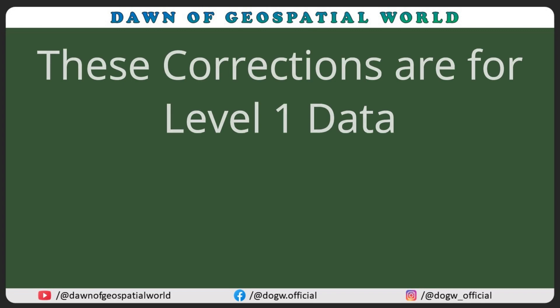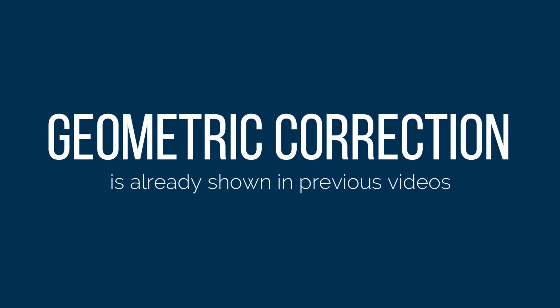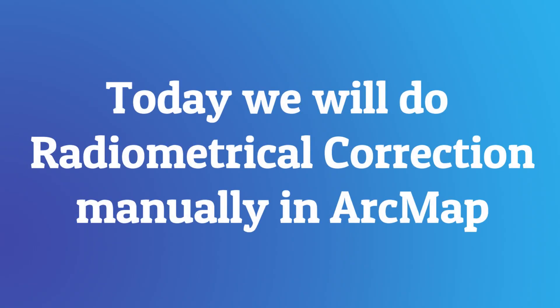These corrections are mainly applied on level 1 satellite data, but nowadays satellite data are available in level 2 collection. Previously, we were showing the process of geometric correction, which is also known as georeferencing. You can check those videos from our channel. Today, I am showing you how we can manually apply radiometric correction on level 1 satellite data in ArcMap.